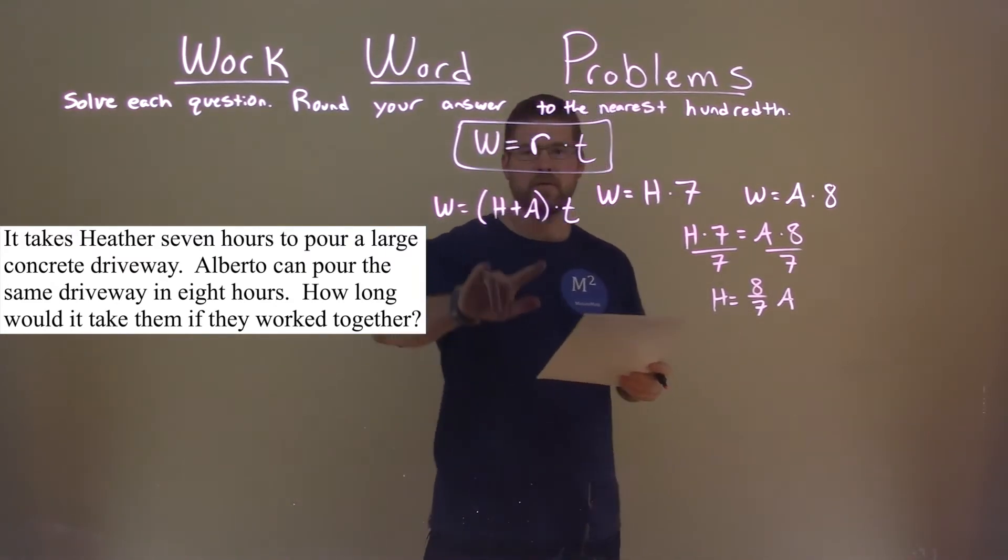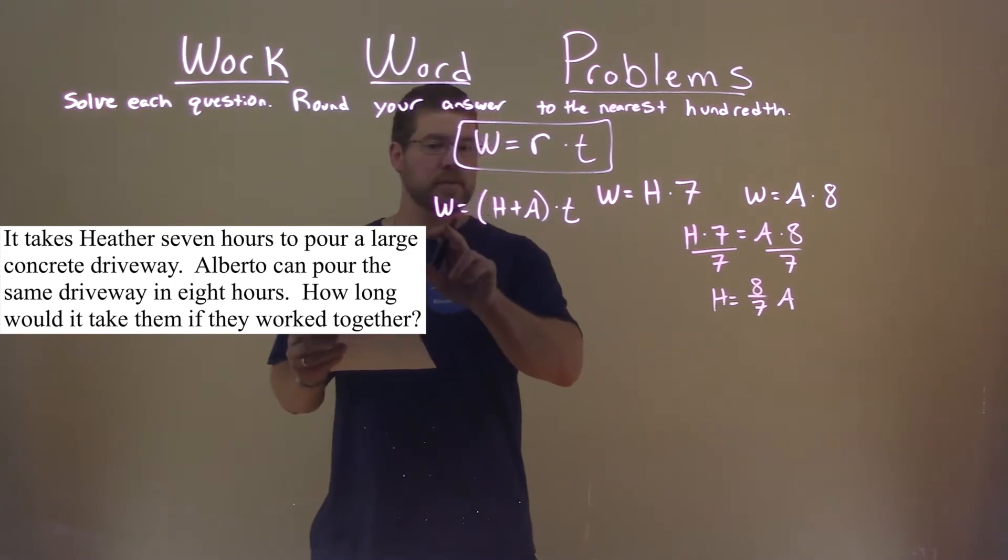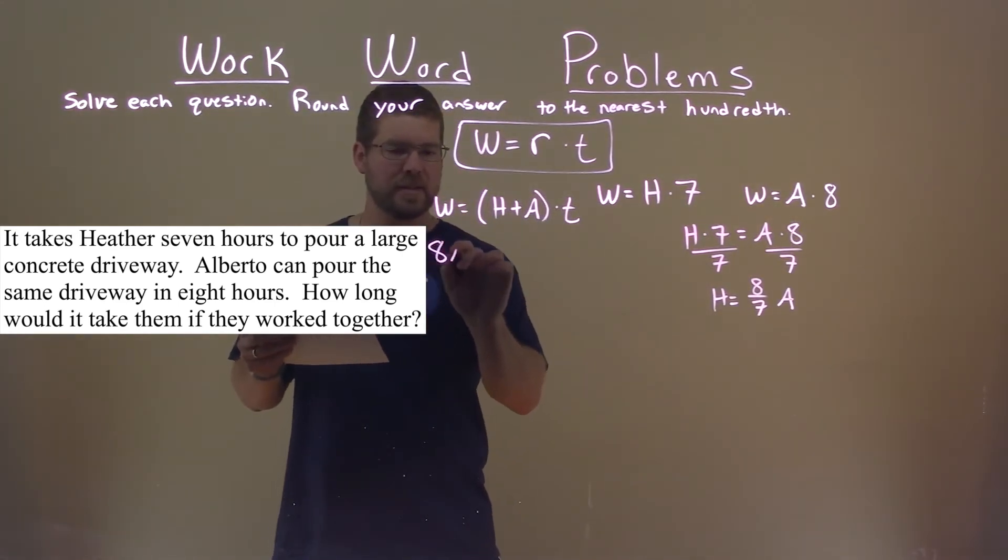So now we're going to use this information with our equation here. Two parts. W, we want to get all this in terms of A. So W is equal to A times eight, or eight times A.